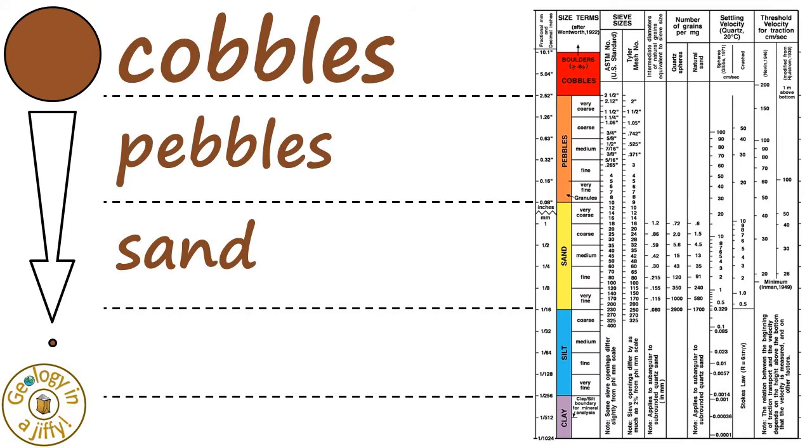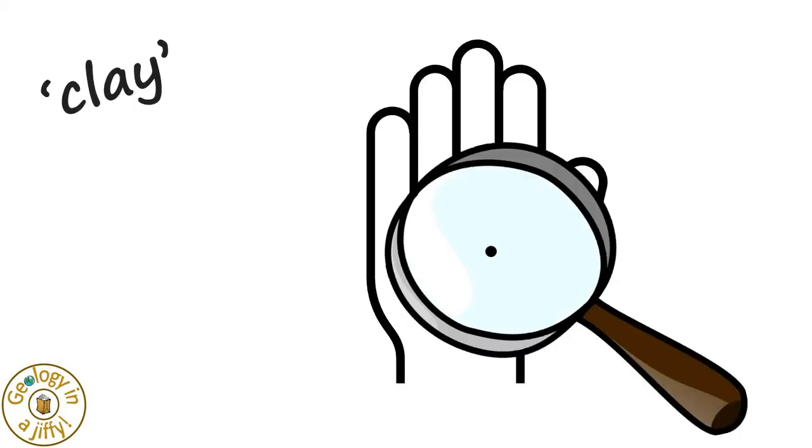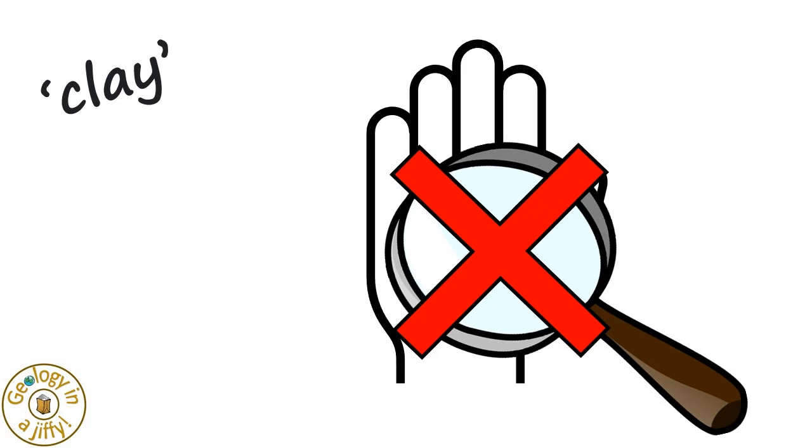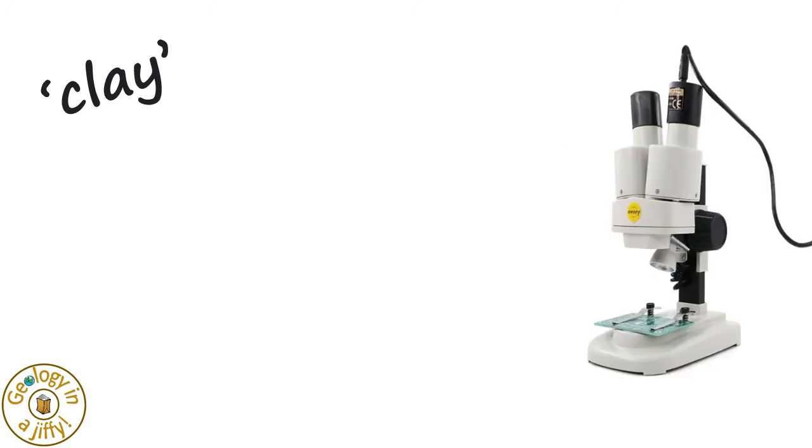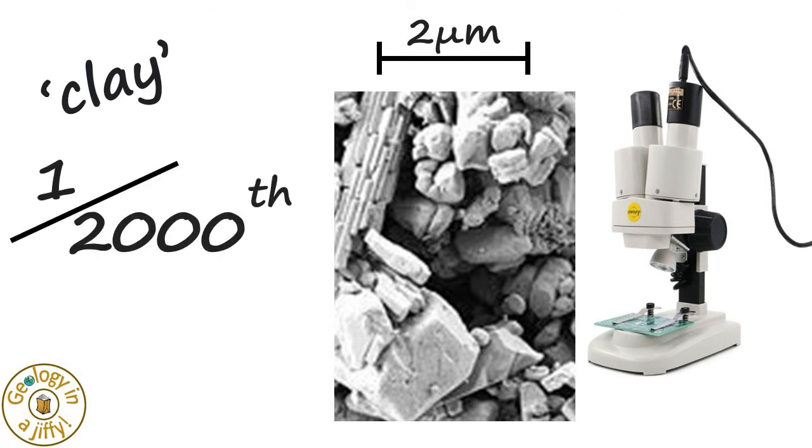With sand, then silt, then clay, which is so small that you would need a microscope, not a hand lens, to study the grains, because clay grains are about two micrometers in diameter. That's one two-thousandth of a millimeter. That's amazing!